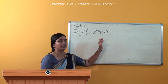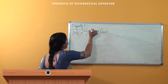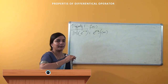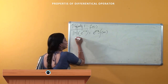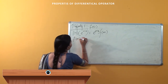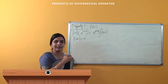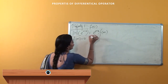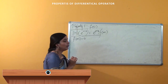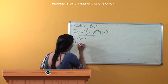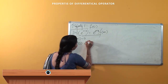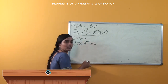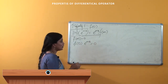Suppose m is a root of this polynomial f(D) of degree n — what will happen? You know that if it is a root, I will get f(m) = 0. So if f(m) = 0, then this equation becomes f(D)·e^(mx) = 0.